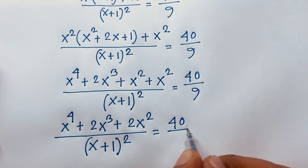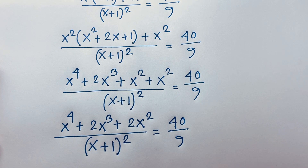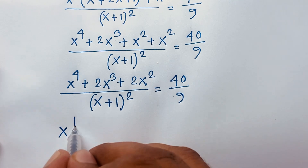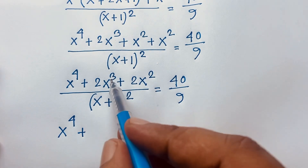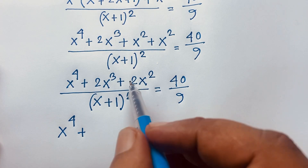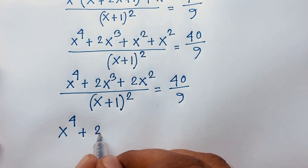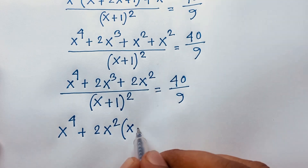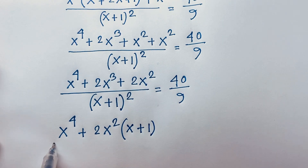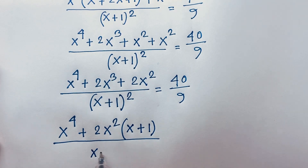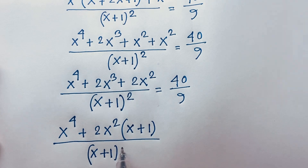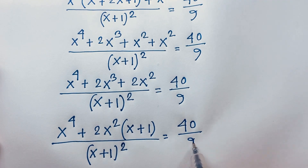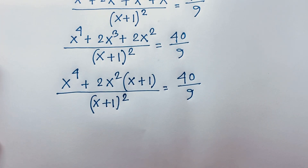You can see here x⁴ + 2x³ + 2x². Since 2x² is common, if I take 2x² as a common factor, dividing gives x and 1 respectively, so we have 2x²(x+1) all over (x+1)² equals 40 over 9.